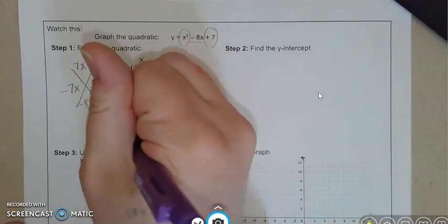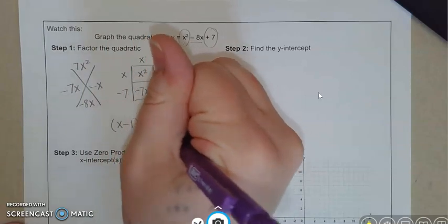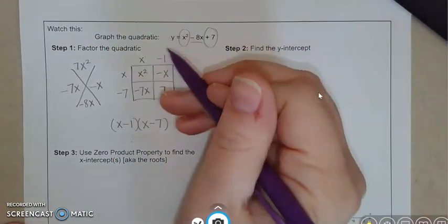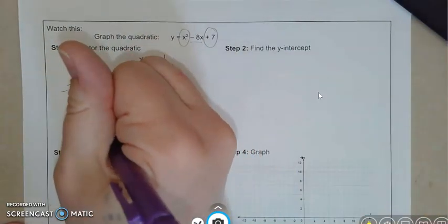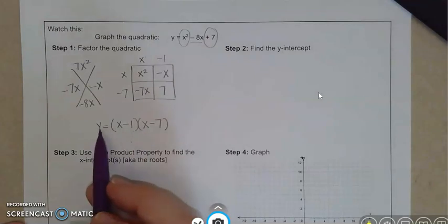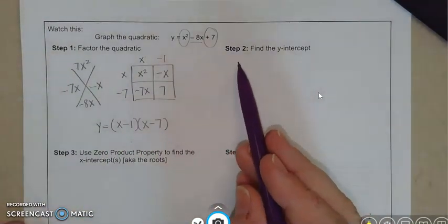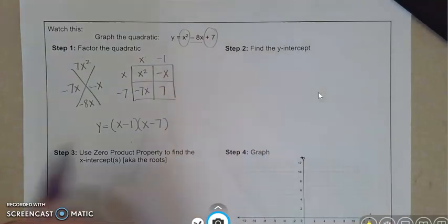So we have our dimension. I'm going to write it as x minus 1 times x minus 7, and this y equals in the front I will make sure it is also in the front. First step done. We got our factored quadratic.